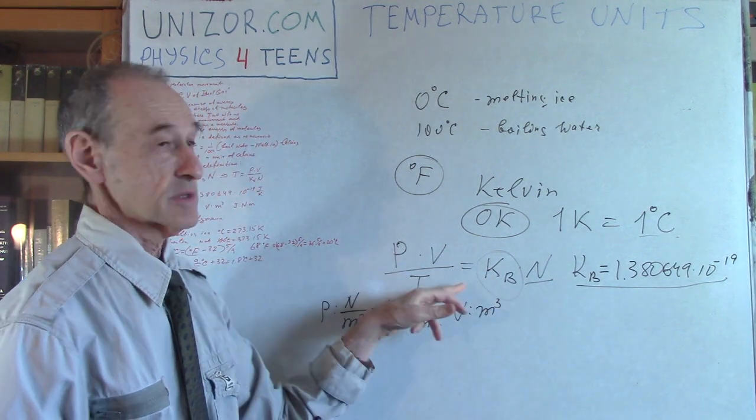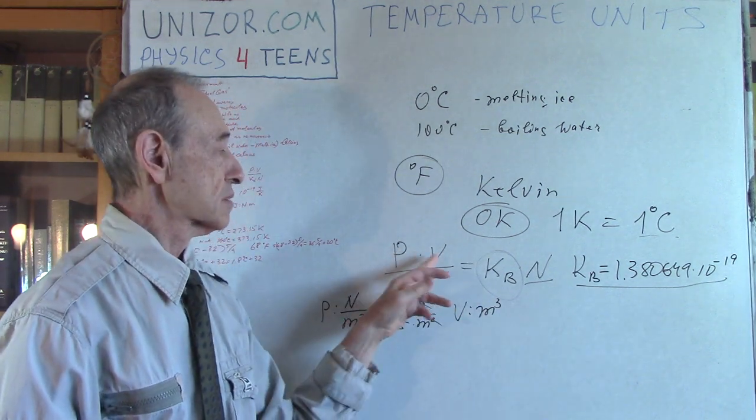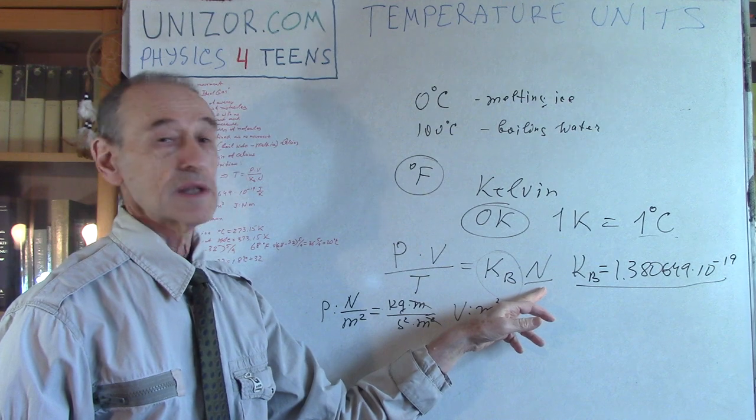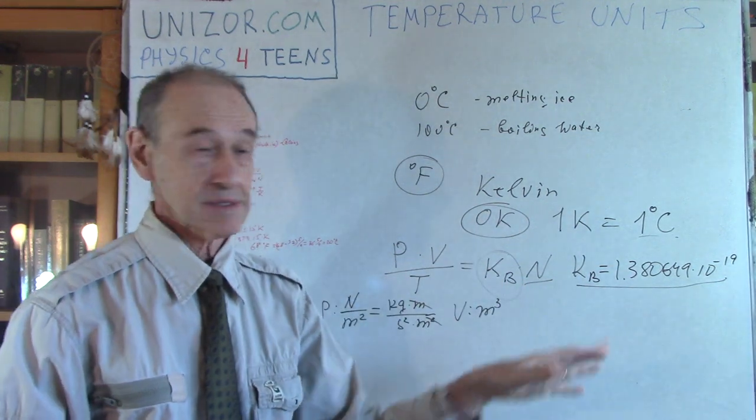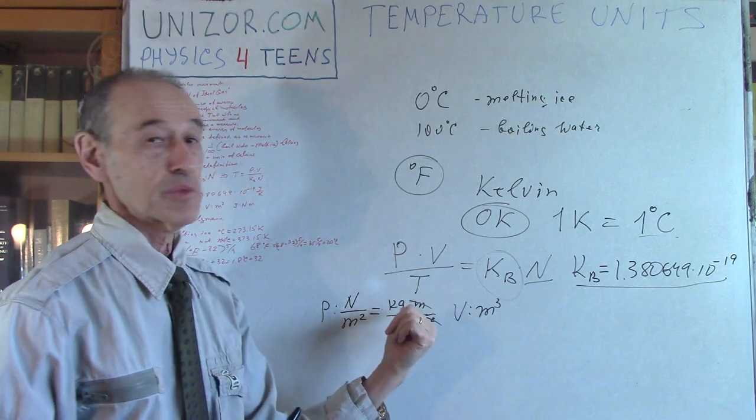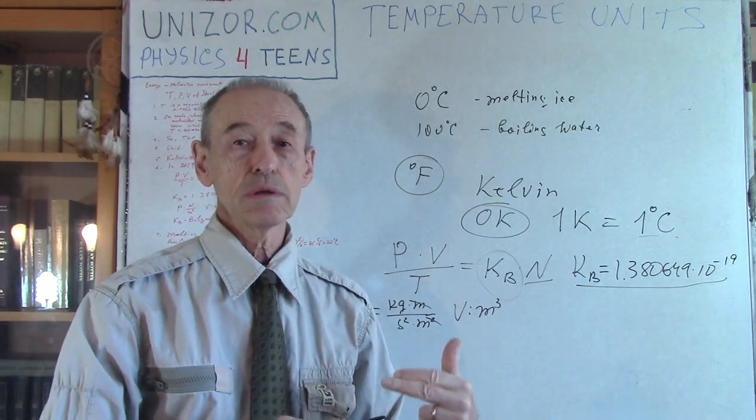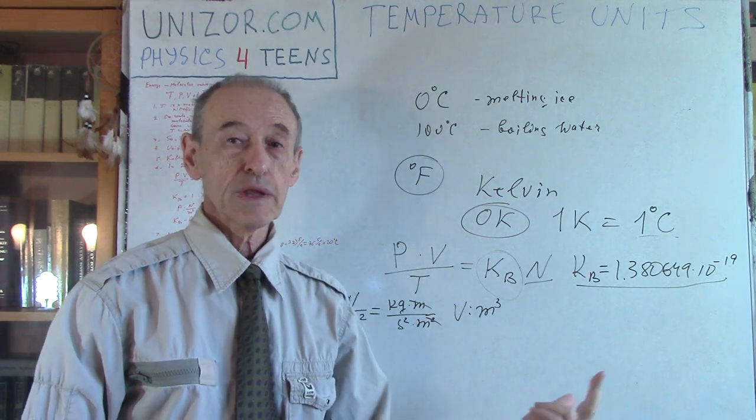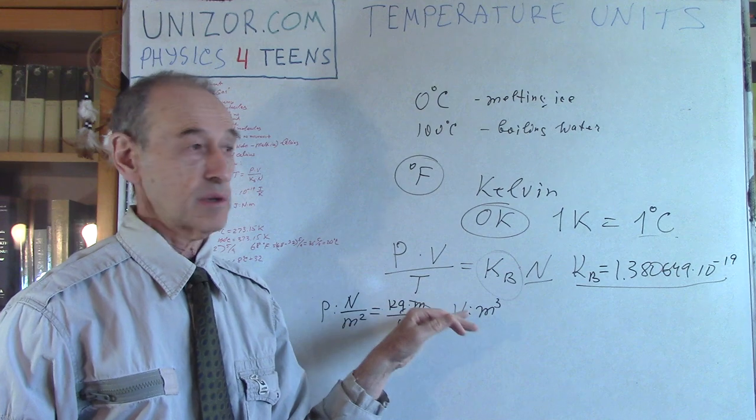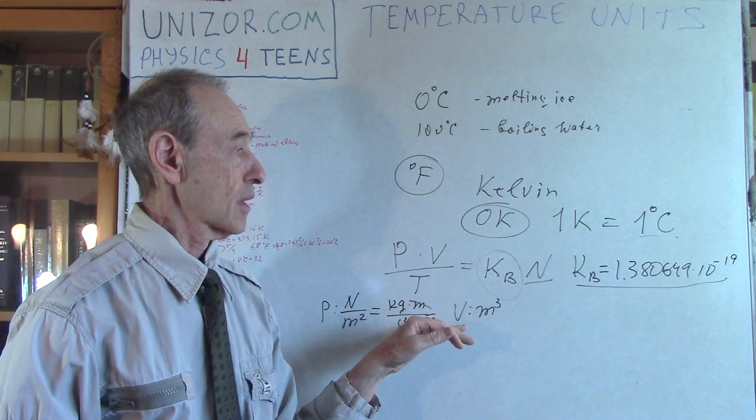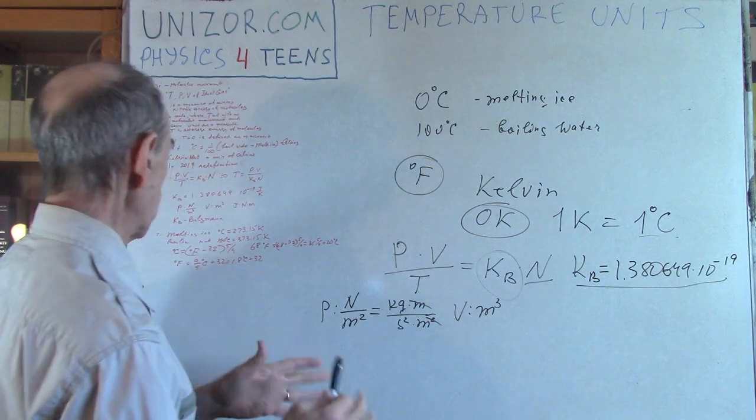So now temperature is defined based on this. If you want to determine the temperature, we have to know the pressure, the volume, and the number of molecules. This we already have defined as this exact number, and that's how we get the temperature. It's the same reverse logic as before - from the constant we define the unit of measurement of temperature. Okay, basically that's it. We have defined the unit.